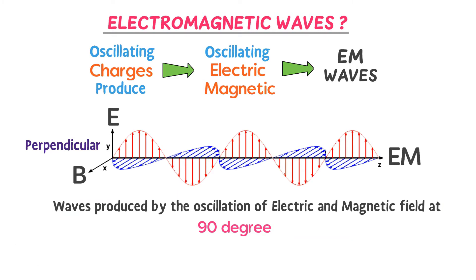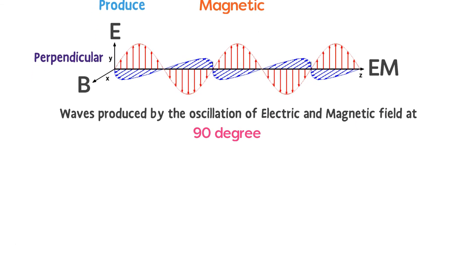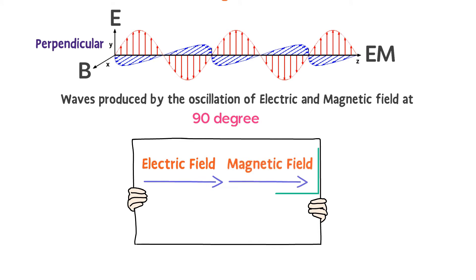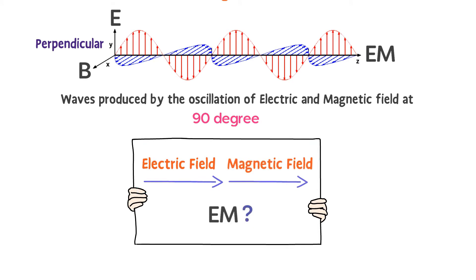Here is a bonus tip: can parallel oscillations of electric and magnetic fields make up an electromagnetic wave? Well, the answer is no. Parallel oscillations of electric and magnetic fields will not make up electromagnetic waves.